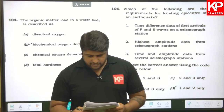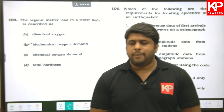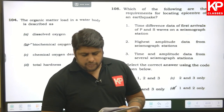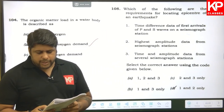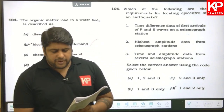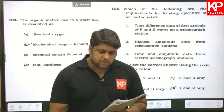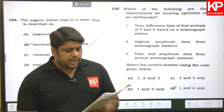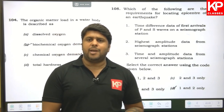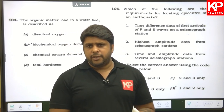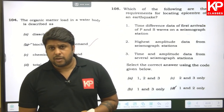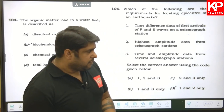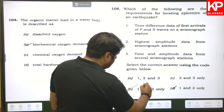Question one hundred and five: the organic matter load is measured as biochemical oxygen demand (BOD) — B is the right answer. Question one hundred and six: requirements for locating earthquake epicenters — time difference data of first arrival of P and S waves at seismograph stations (required). Highest amplitude data is not needed — amplitude is used for magnitude calculation, not epicenter location. So only statements one and three are needed, and B is the right answer.